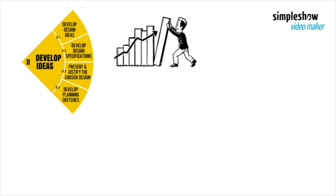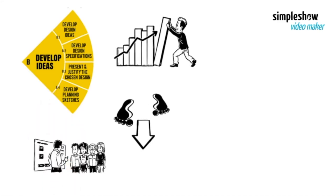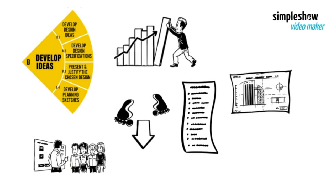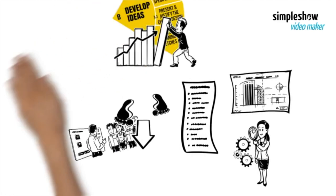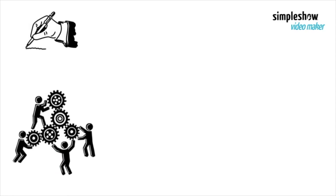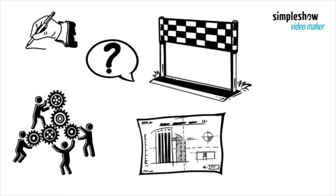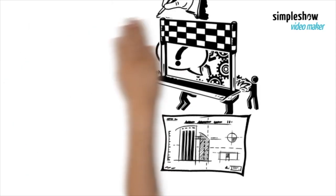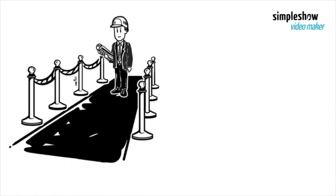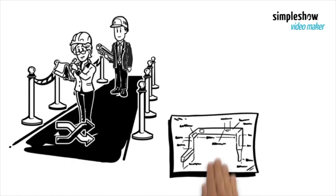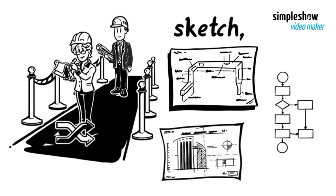The second criteria is developing ideas. In this criteria, students come up with a detailed plan for their solution. They need to write down what their design needs to achieve, come up with several design ideas, choose the best idea and explain why, and make clear drawings or plans.